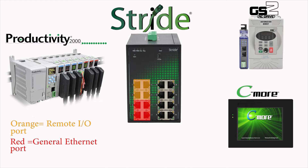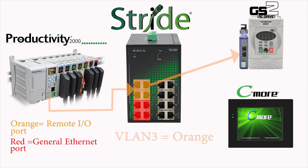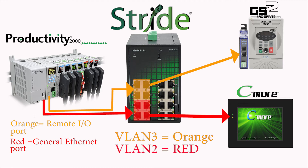With VLAN, segregating this network is simple. The Remote I/O port of the Productivity 2000 and the Remote I/O Drive are plugged into ports set up for VLAN 3 on ports 5 through 8. The HMI and the other Ethernet port of the Productivity 2000 are plugged into ports set up for VLAN 2 on ports 1 through 4.